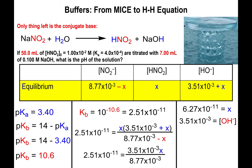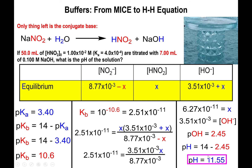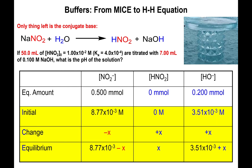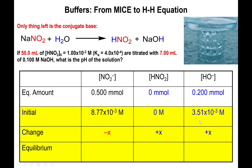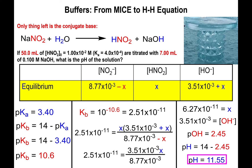The hydroxide concentration effectively remains 3.51 × 10⁻³ M. So after your MICE table, simply take the millimoles of excess hydroxide divided by total volume, take the negative log to get pOH, then subtract from 14 to get pH. You can completely disregard the nitrite contribution — take the 0.2 millimoles of excess hydroxide divided by 57 mL, take the negative log, and subtract from 14.